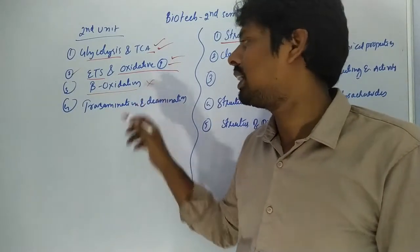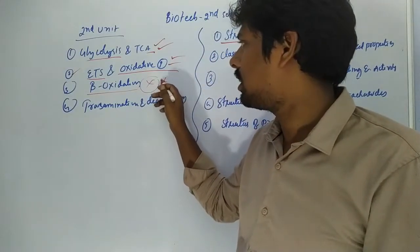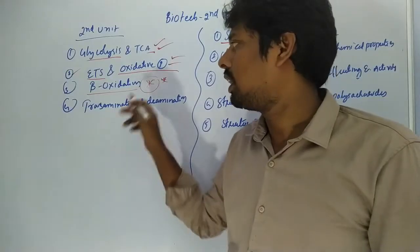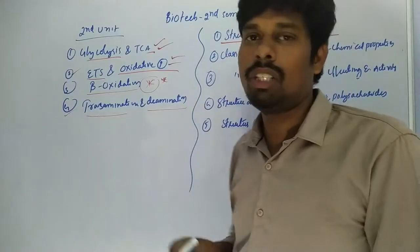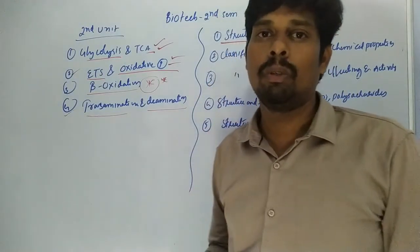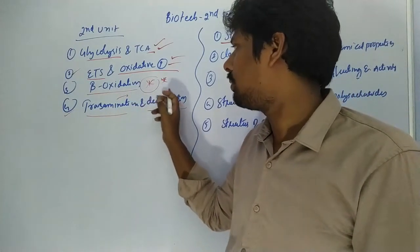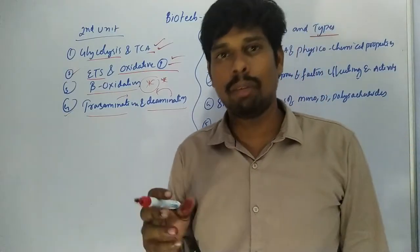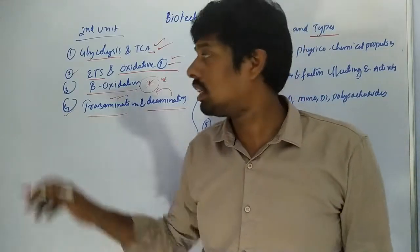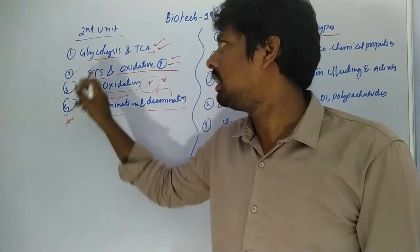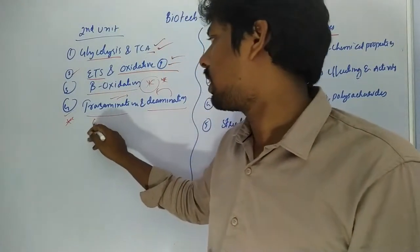Beta oxidation is related to acetic acid and is an important question. The fourth important question is transamination and deamination — the first question is amine group transfer, and the second question is also amine group transfer or amine group removal.